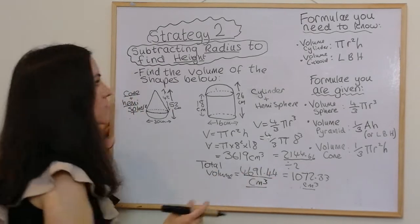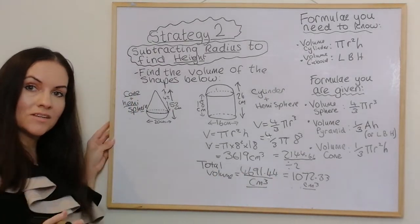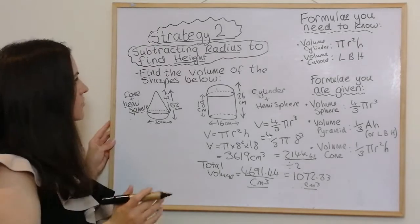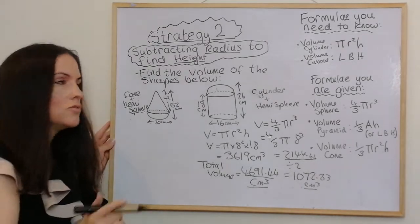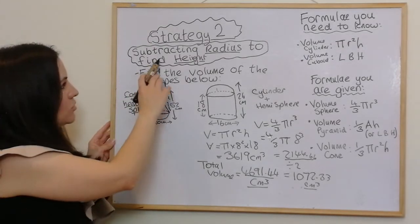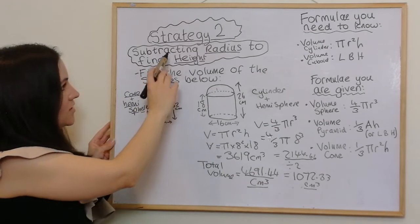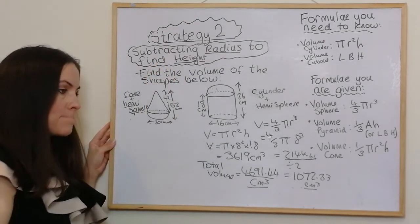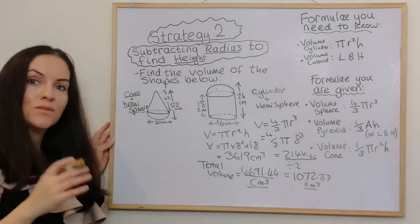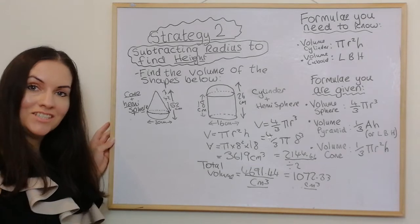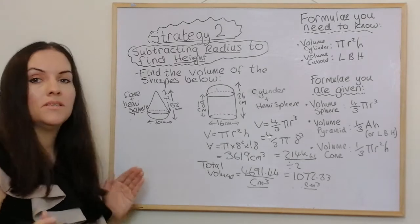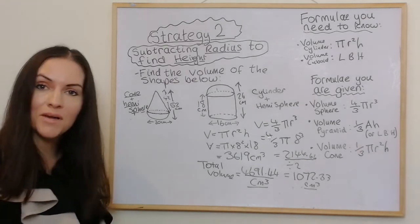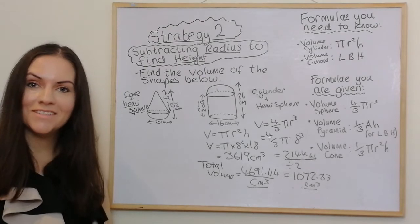So far we've looked at the first two strategies for answering a volume question in National 5 Maths: substituting in values, and subtracting the radius to find the height. In the follow-on video I'm going to look at strategies three and four. Please like, please subscribe, and feel free to suggest any other maths videos you would like to see.